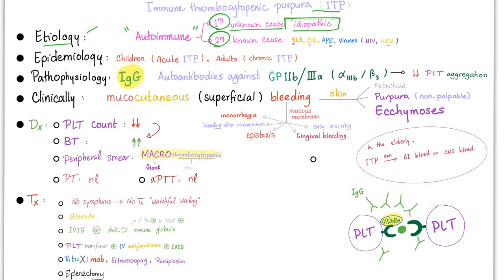Treatment: no symptoms, no treatment — practice watchful waiting. If it's getting worse, use steroids or IVIG. Platelet transfusion is used if the count is really low and bleeding is severe — you can add steroids and even IVIG alongside the platelet transfusion.